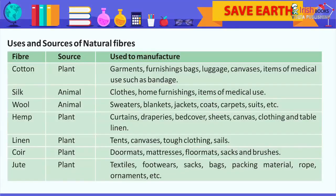Uses and sources of natural fibers. Cotton — source: plant; used to manufacture: garments, furnishing bags, luggage, canvases, items of medical use such as bandage. Silk — source: animal; used to manufacture: clothes, home furnishings, items of medical use.